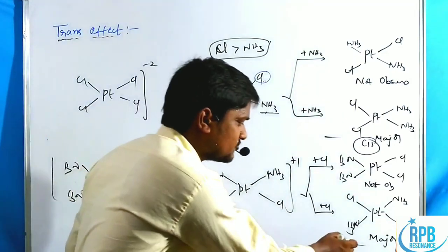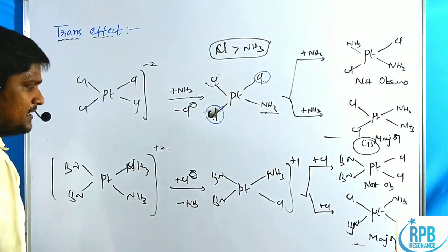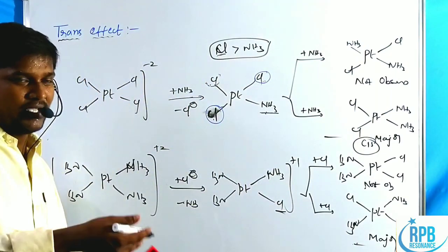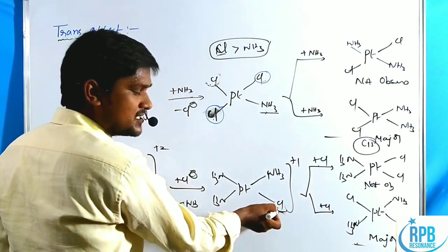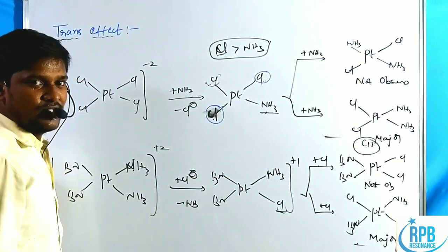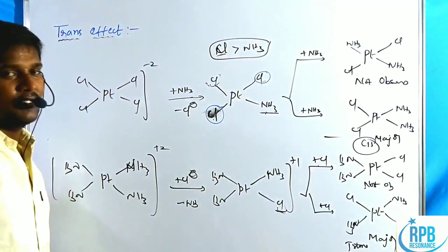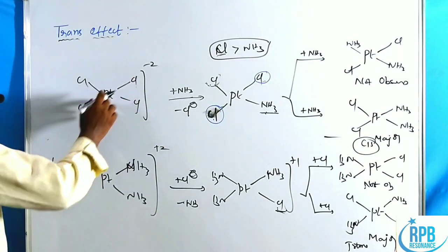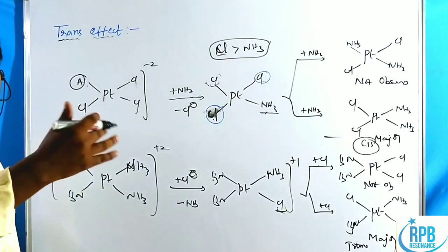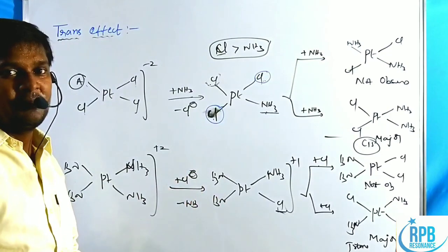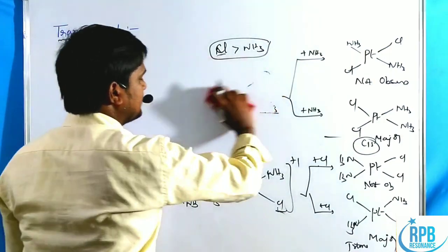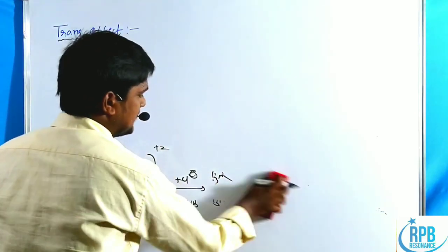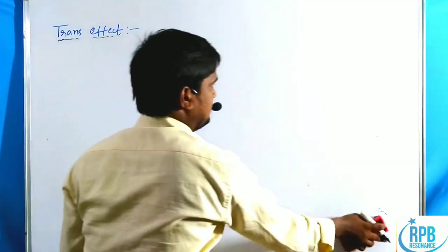Similarly, when starting from Pt(NH3)4^2+ with successive addition of chloride ions, chlorine, being the stronger trans-directing group, directs the incoming chloride to its trans position, giving the trans compound as the major product. Before going to the trans effect series, let us discuss how these trans-directing groups work, which is explained by two theories: the sigma bond theory and the pi bond theory.